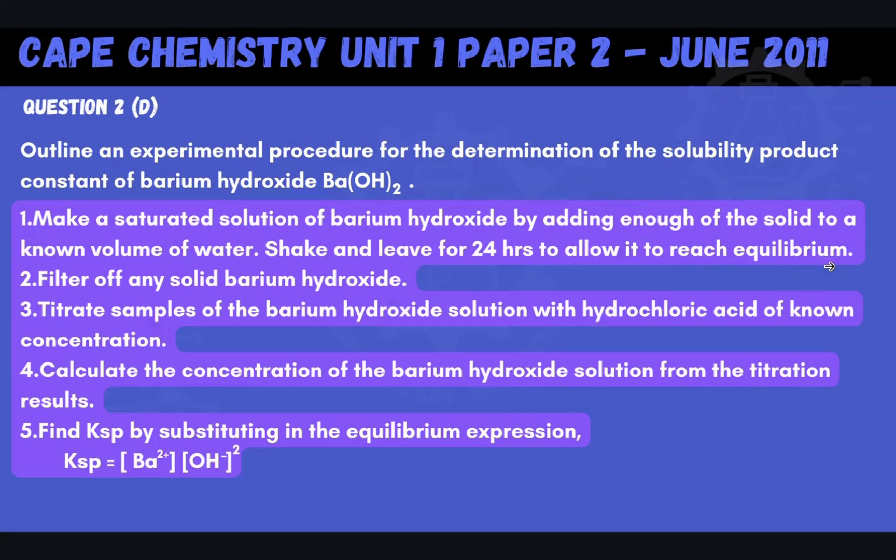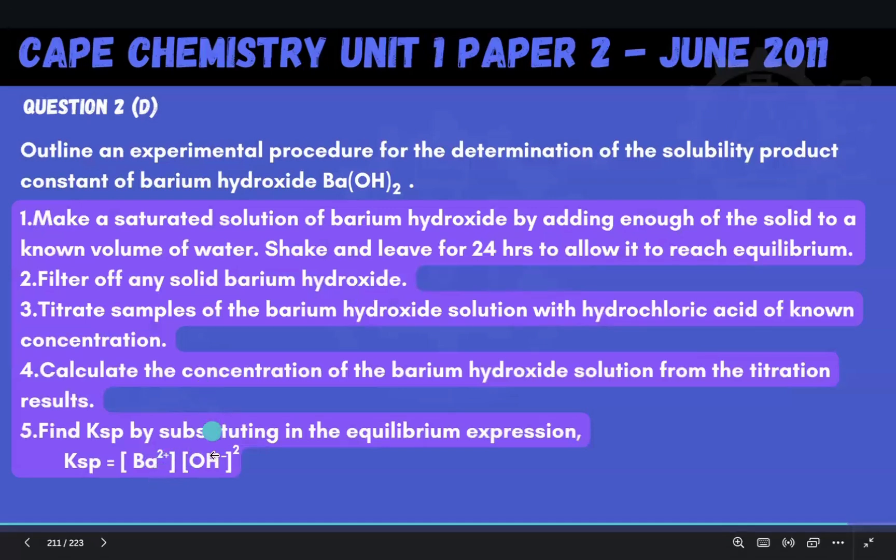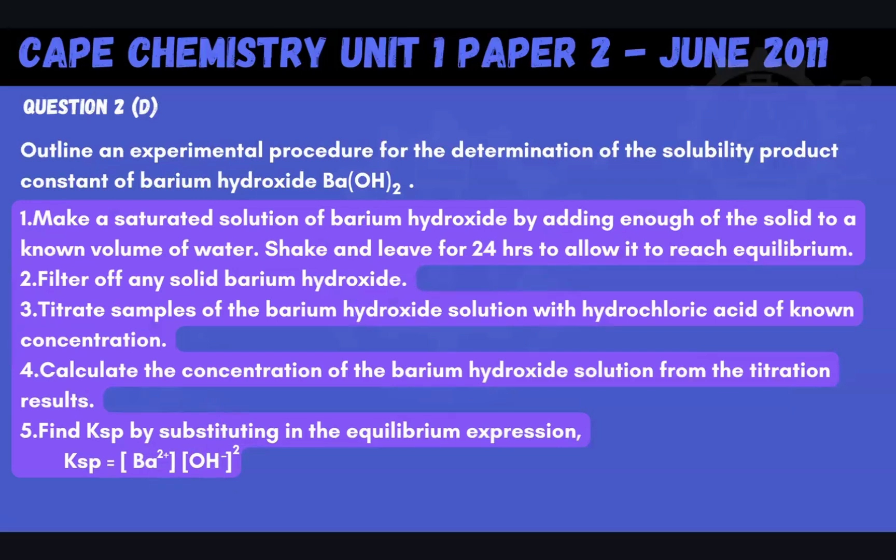After we have reached equilibrium, we're going to filter off any solid barium hydroxide. Then we're going to take little samples from our equilibrium mixture and we're going to titrate those samples with hydrochloric acid of known concentration. So effectively, what are we doing? We're doing an acid-base titration to figure out the concentration of barium hydroxide. Once we've been able to calculate the concentration of barium hydroxide from that titration, then we automatically know the concentration of the Ba2 plus ions and the concentration of the hydroxide ions in that saturated solution at 25 degrees C. It's a very important part. So we have to be controlling our temperature.